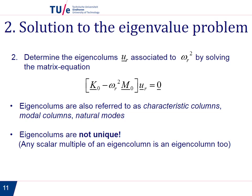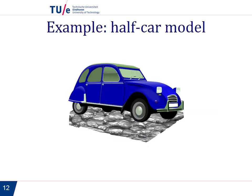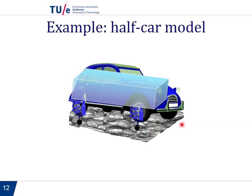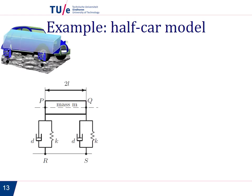Let's look into this with an example. Let's take the half-car model for a car. A half-car model looks like this: we take a mass and model the front suspension with a spring-damper element and the rear suspension with another spring-damper element.